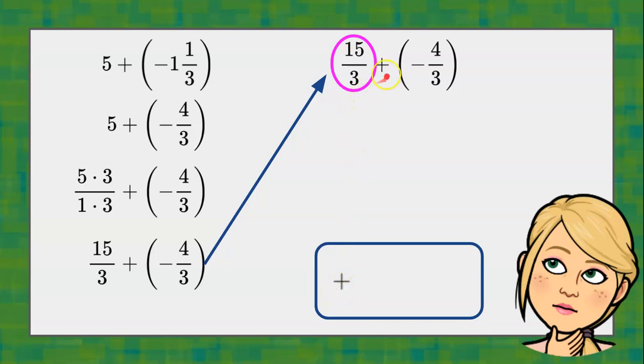Now we're ready to add the numerators. We're going to keep our denominator and add 15 and negative 4. They have two different signs. So you're going to take the larger absolute value, subtract the smaller absolute value for a difference of 11.